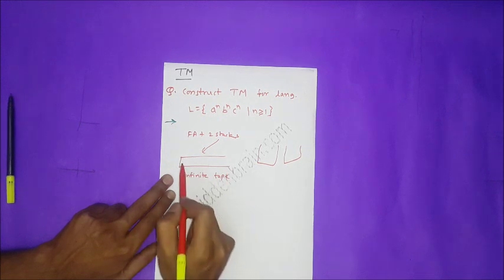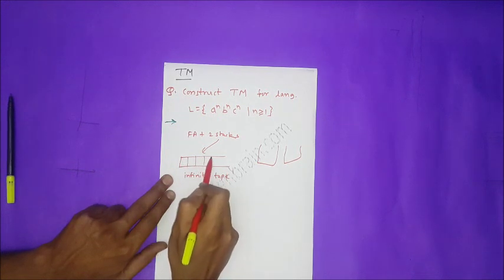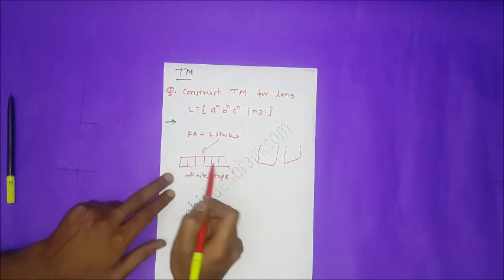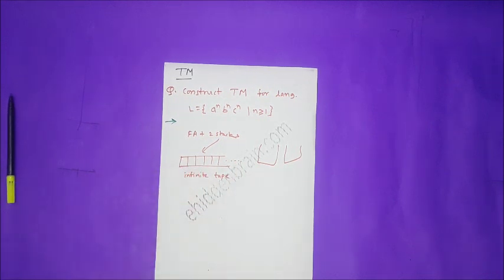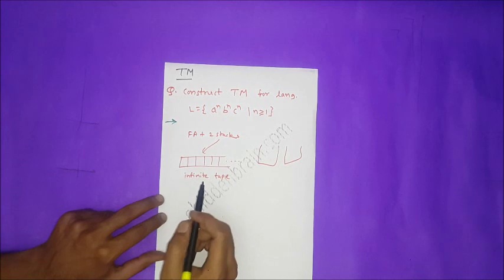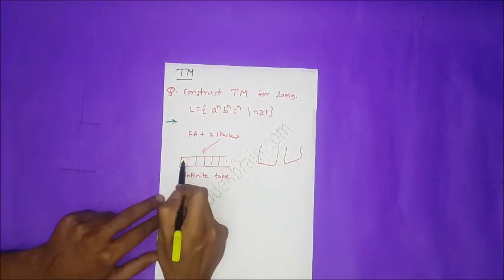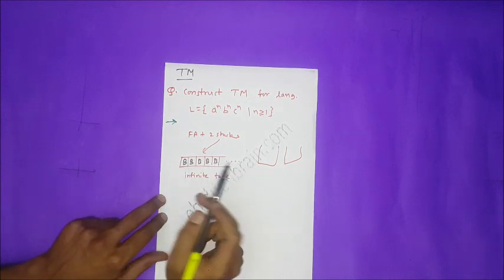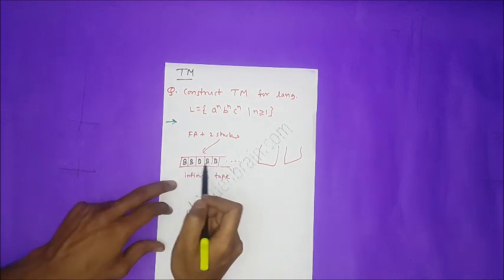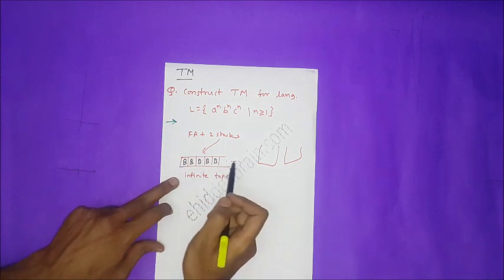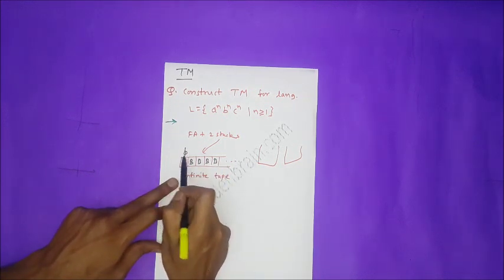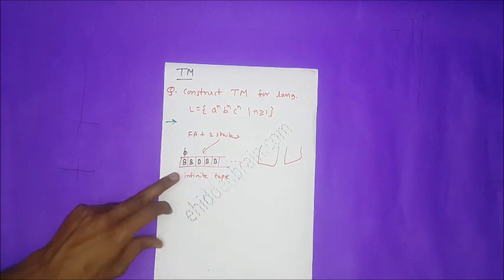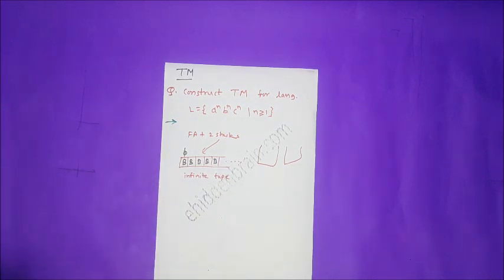The infinite tape can hold characters, and it can be read right to left, left to right, or both, depending on the type of tape used. All inputs are surrounded by blank symbols (denoted B), meaning nothing is on the tape initially — each character position is blank.